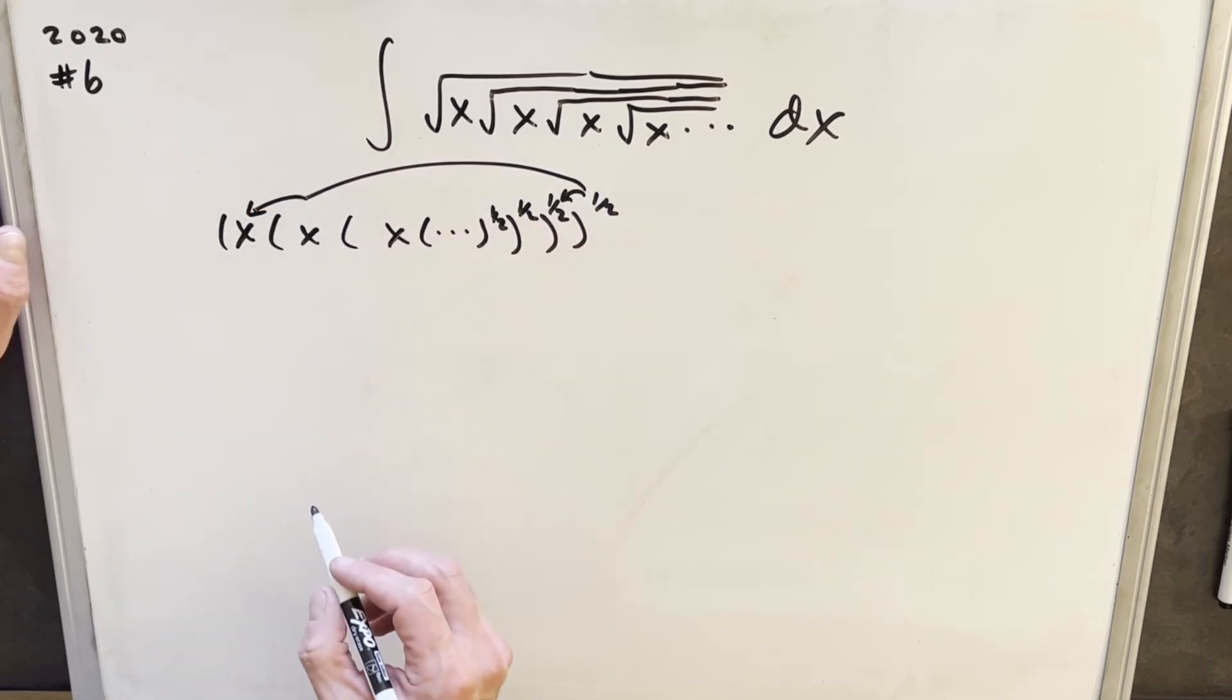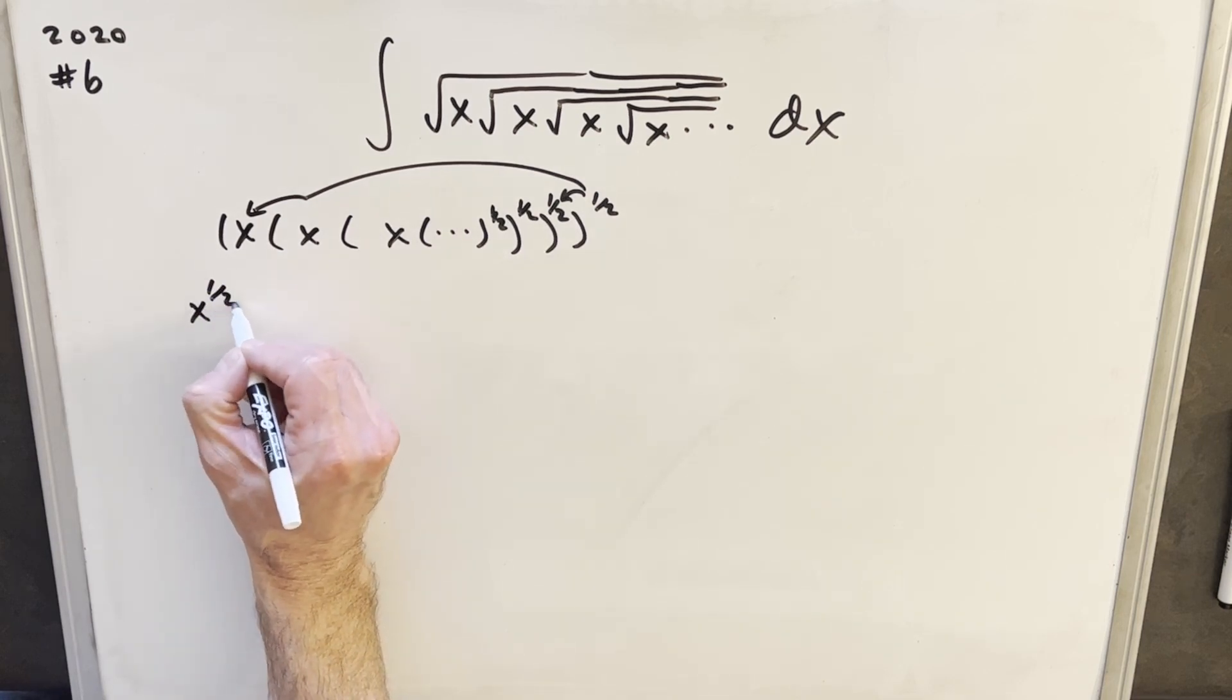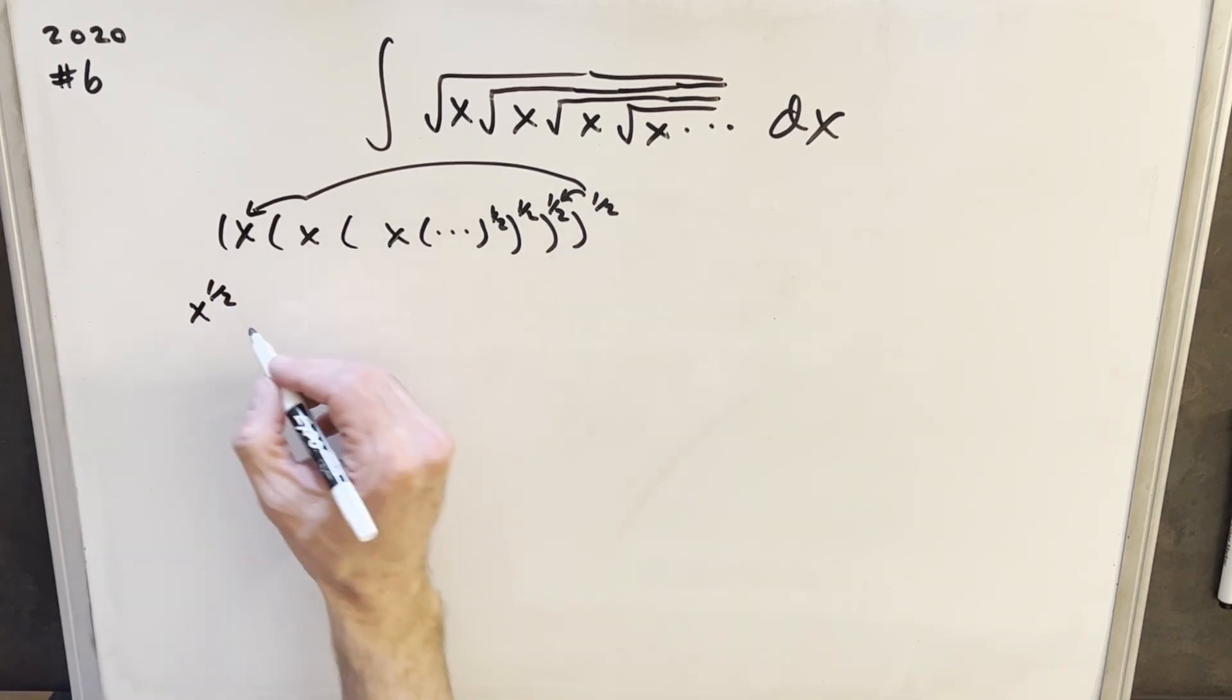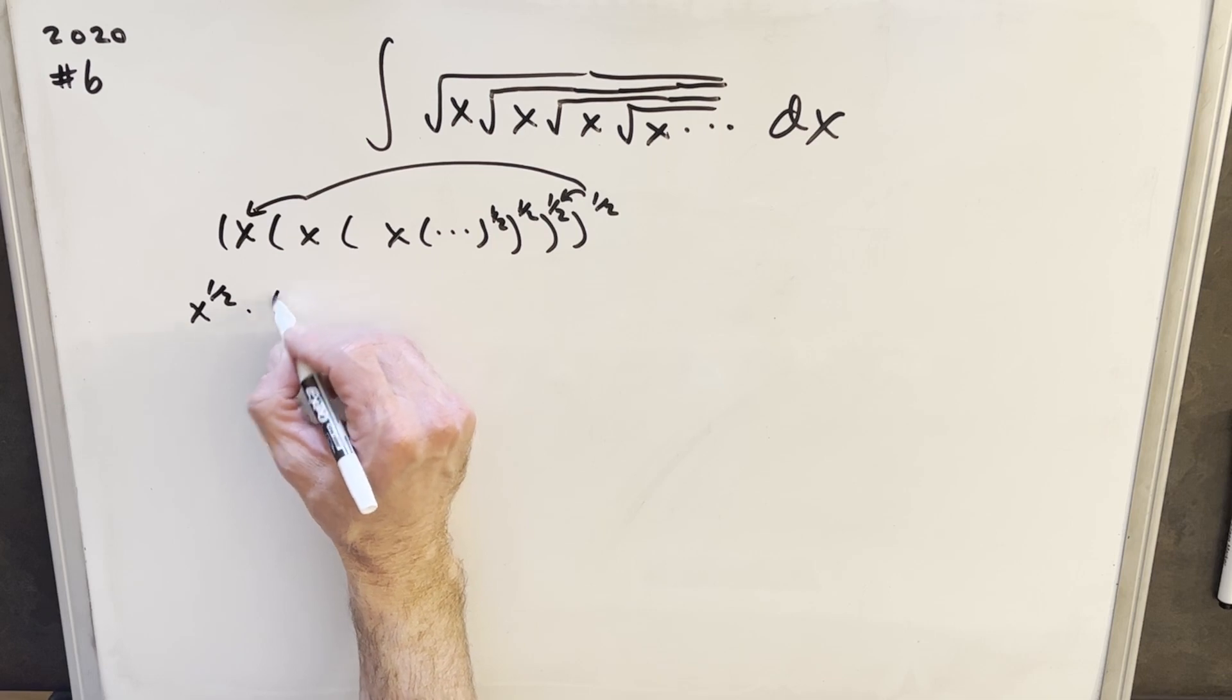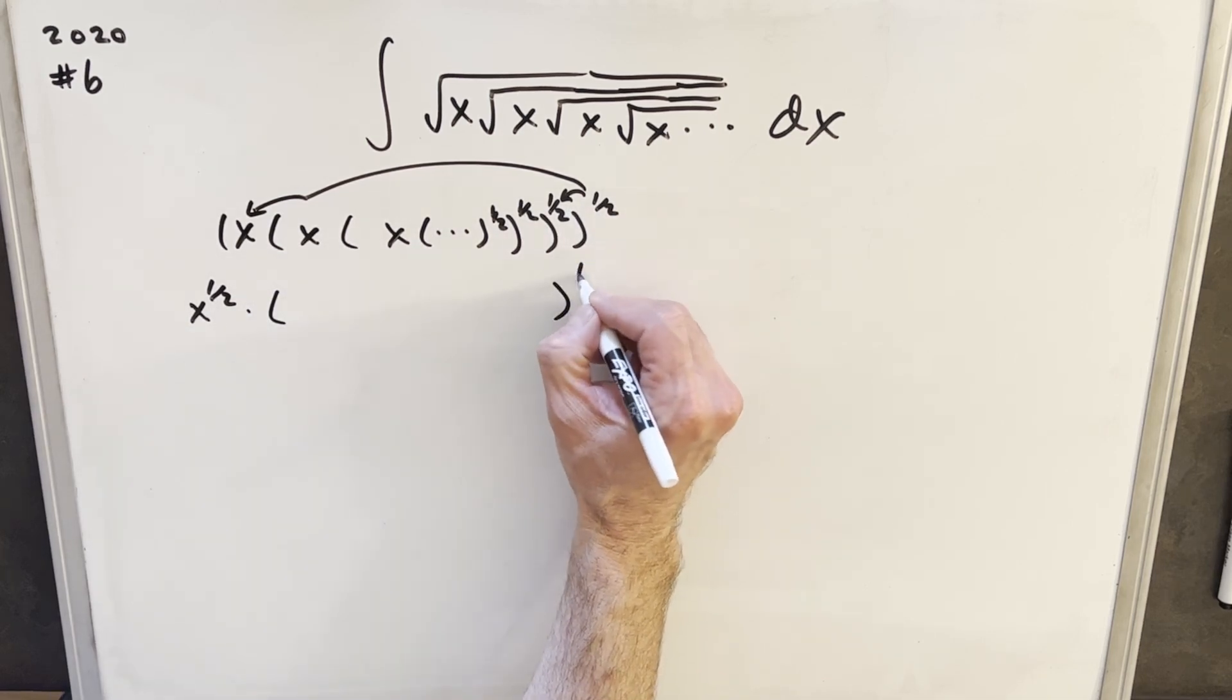And then we can rewrite this again. So distributing in this one half, we're going to have an X to the one half out front. And this is just multiplied by this whole expression. But then on this whole thing, now this half times a half is going to give us a quarter over here.